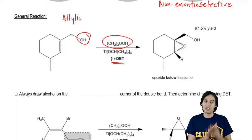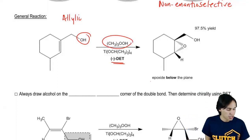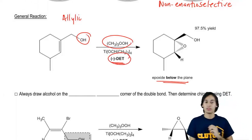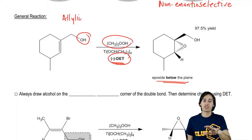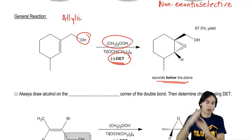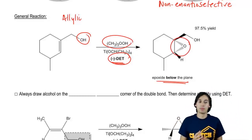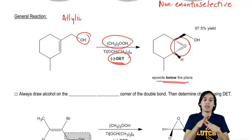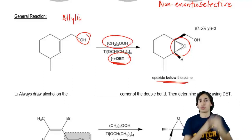So if I want my epoxide to face down, then I would use - if I want it to be below the plane, then I would use a negative tartrate. A negative tartrate is going to attack from the bottom of the double bond and is going to give me my epoxide at the bottom. Now obviously that means if the epoxide is facing towards the bottom, then my other substituents must be forced up.